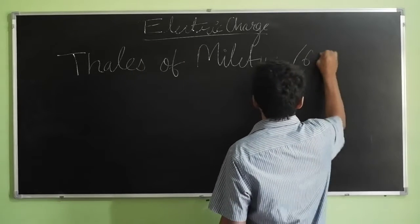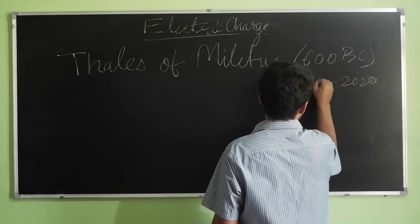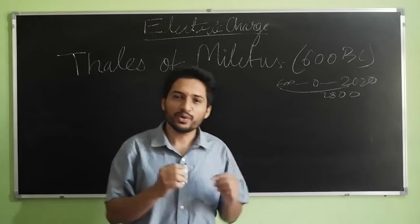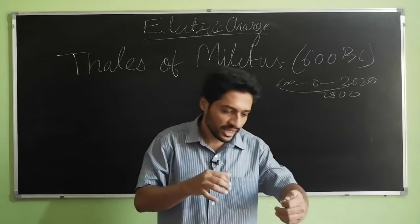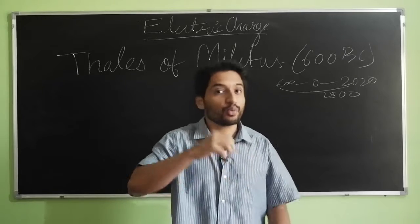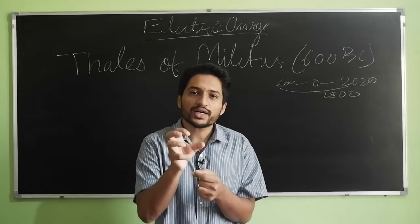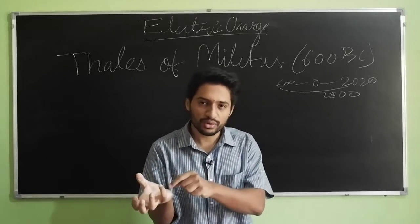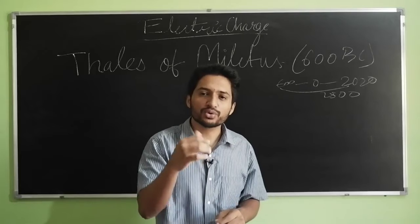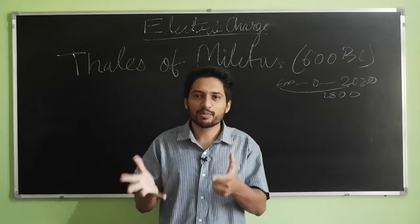This was around 600 BC, which is about 2800 years ago. What Thales did was he found a cat, rubbed amber on it, and observed that the amber got magical properties — it could attract dry leaves. He placed the amber over dry leaves and found it could attract many light objects like fur.